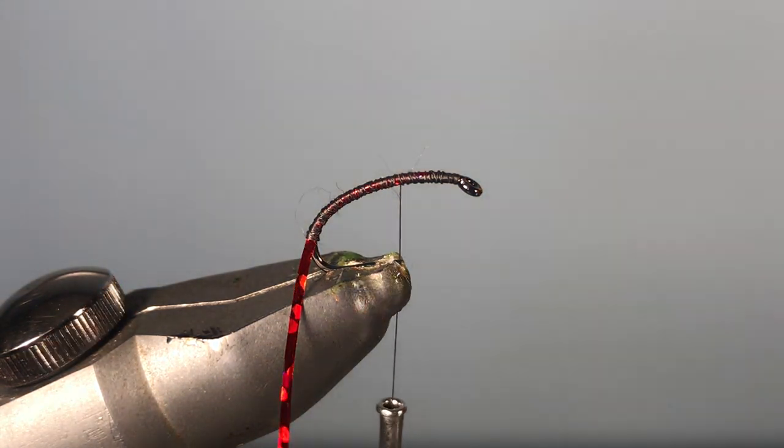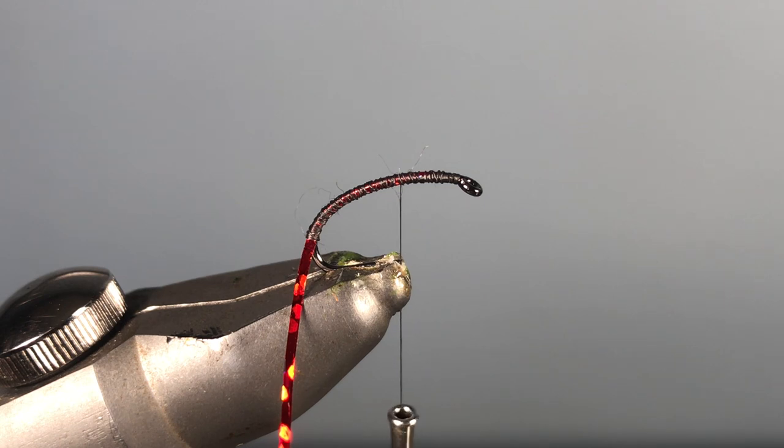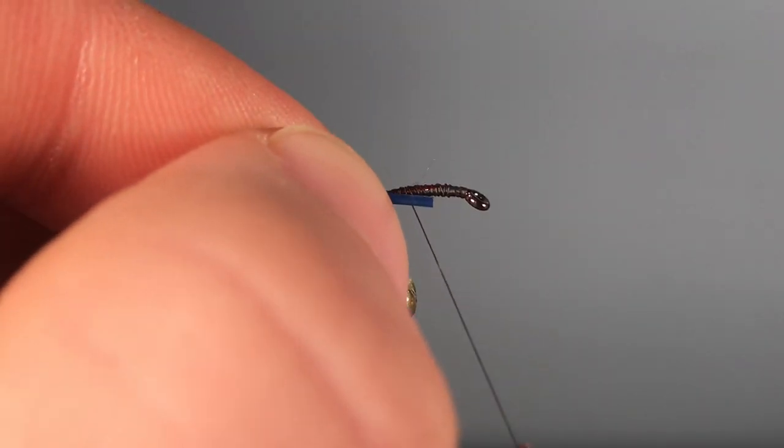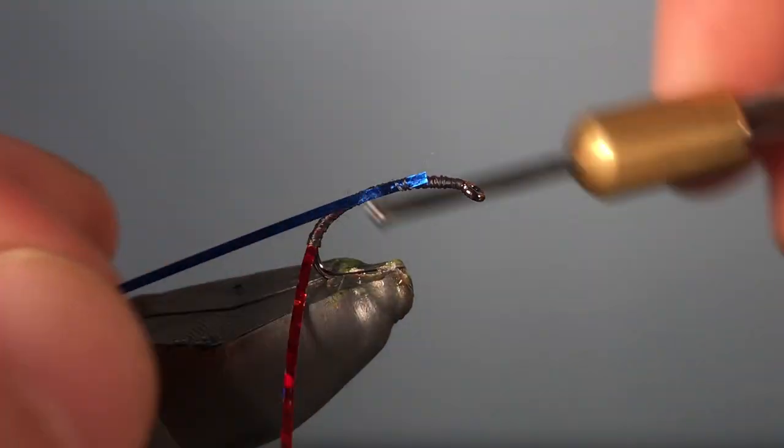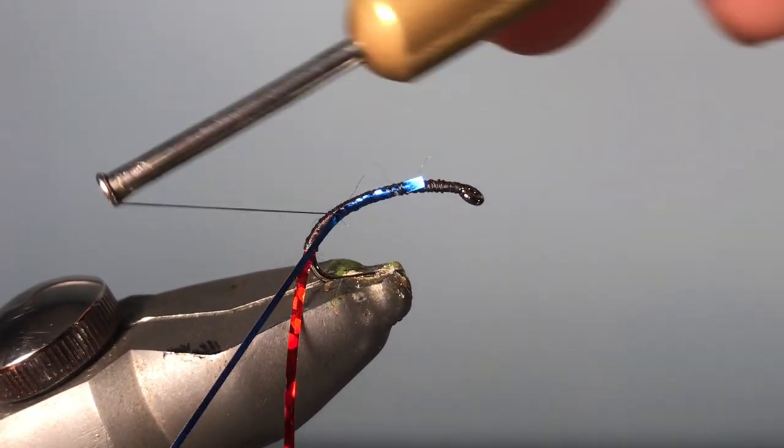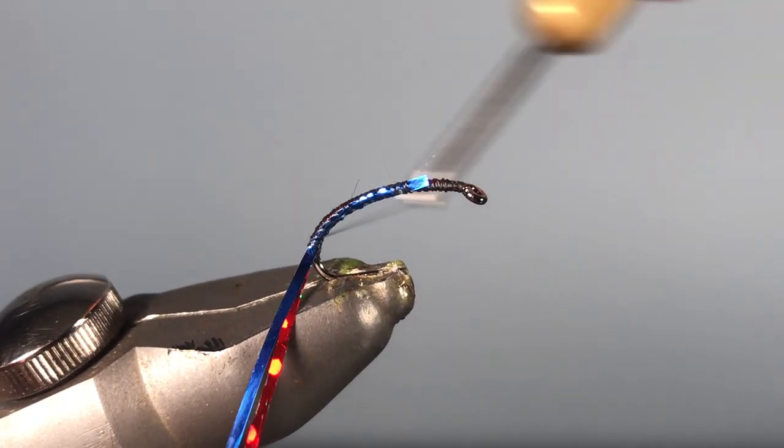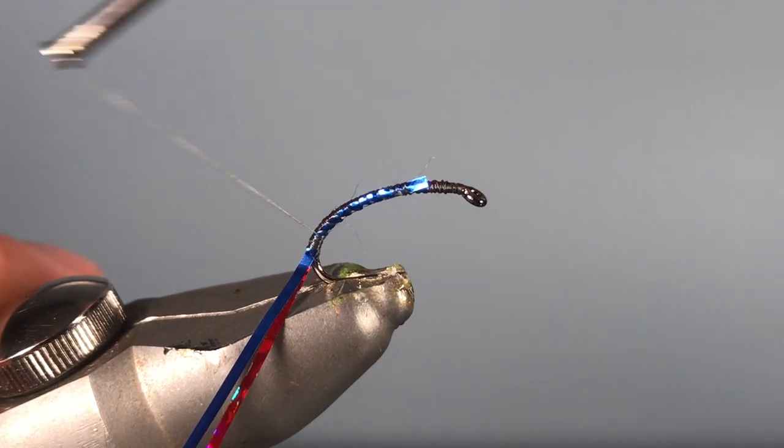And then what you want to do is snip off the same size as what you did with the red, and then what you want to do is tie in that tinsel to the same point as before, and then bring your thread back with touching turns.